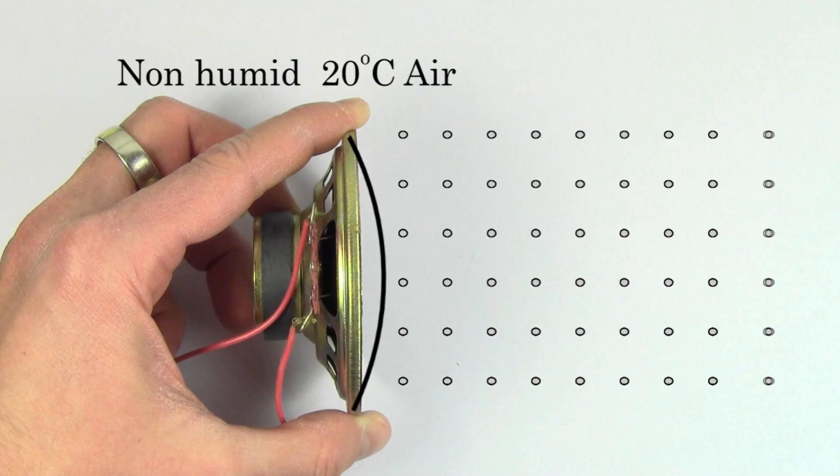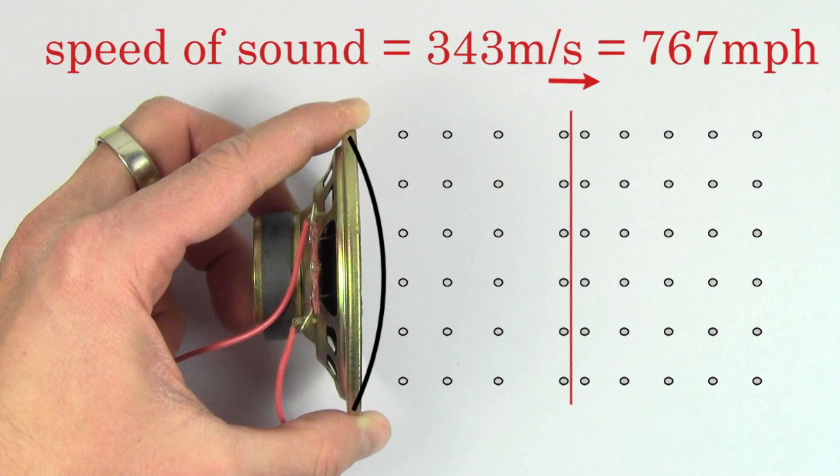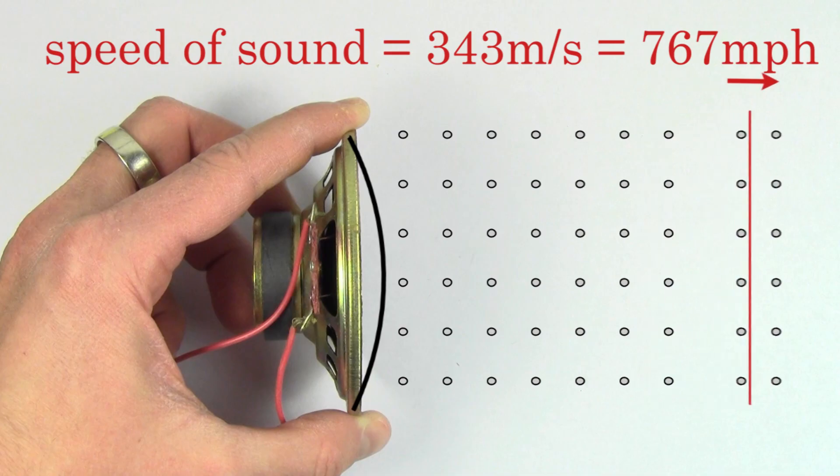In non-humid air at 20 degrees Celsius, the speed of sound is about 343 meters per second, or 767 miles per hour.